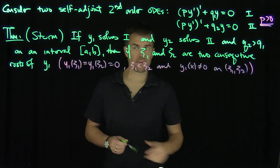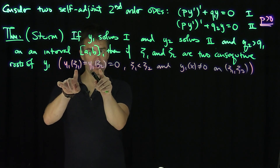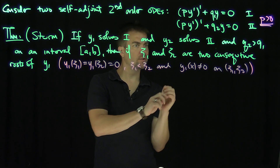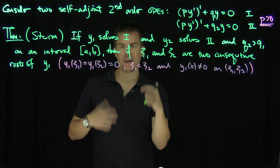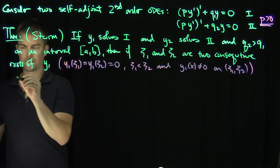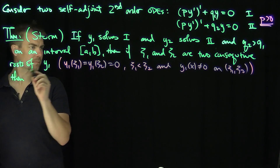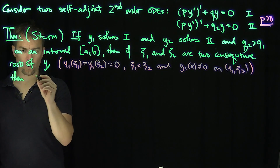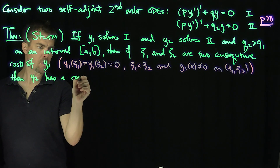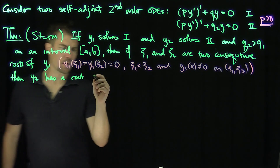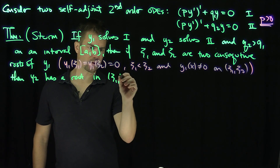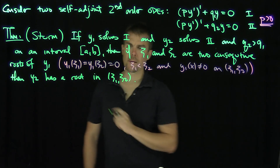Then if y1 has two consecutive zeros, the solution y2 is going to have to vanish somewhere on (ζ1, ζ2). In other words, y2 has a root on the open interval (ζ1, ζ2).